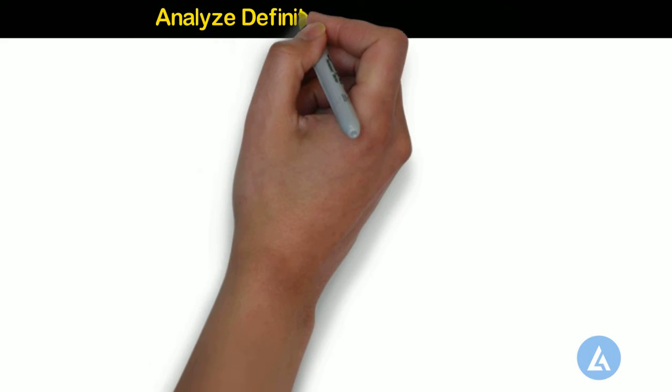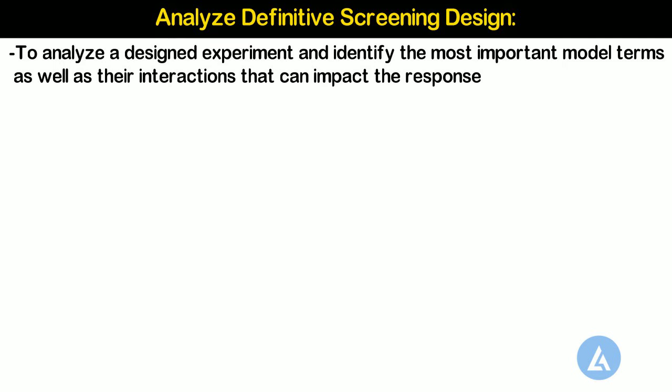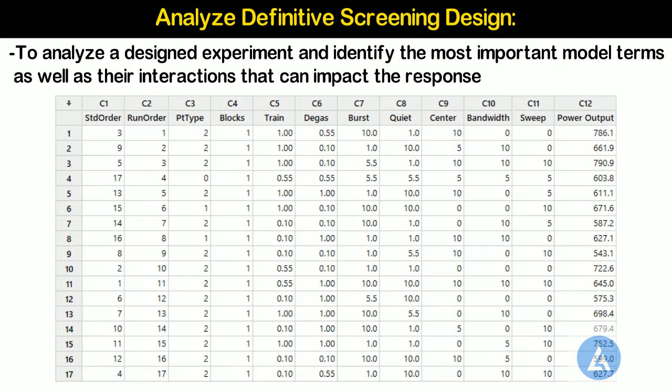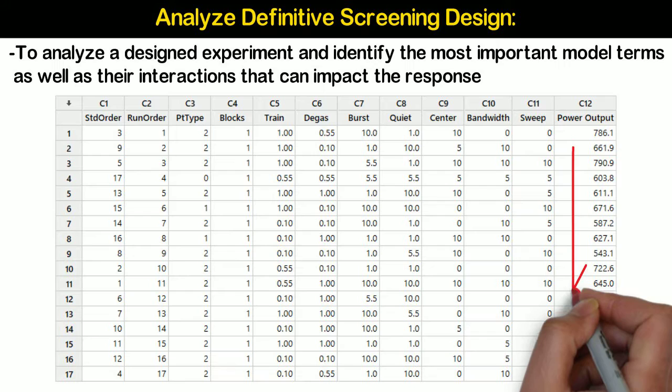Analyze definitive screening design. Use analyze definitive screening design to analyze a designed experiment and identify the most important model terms as well as their interactions that can impact the response. You can analyze your design after you create or define a screening design and add at least one response column in your worksheet.